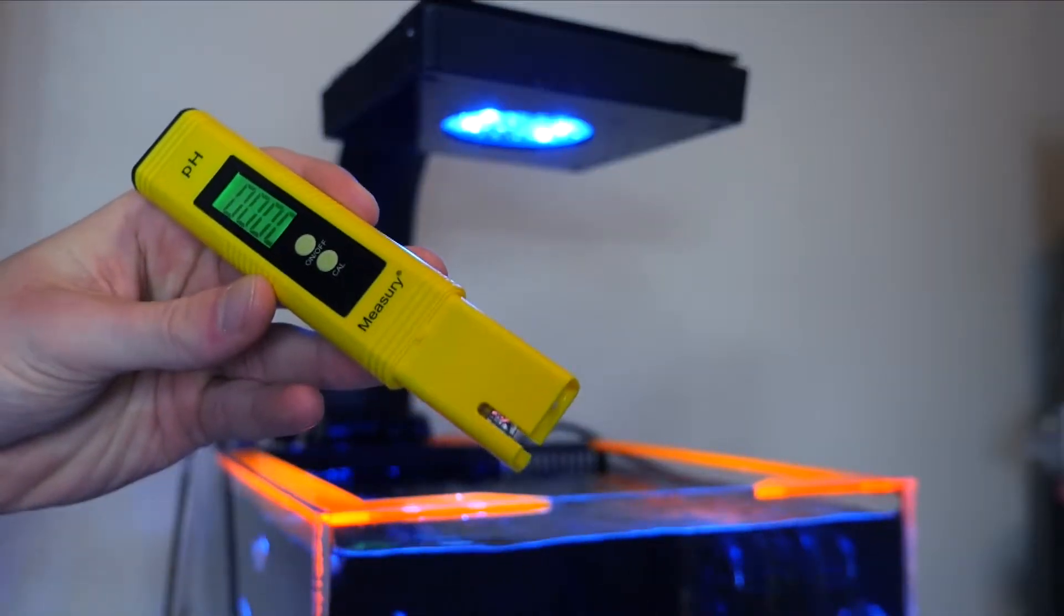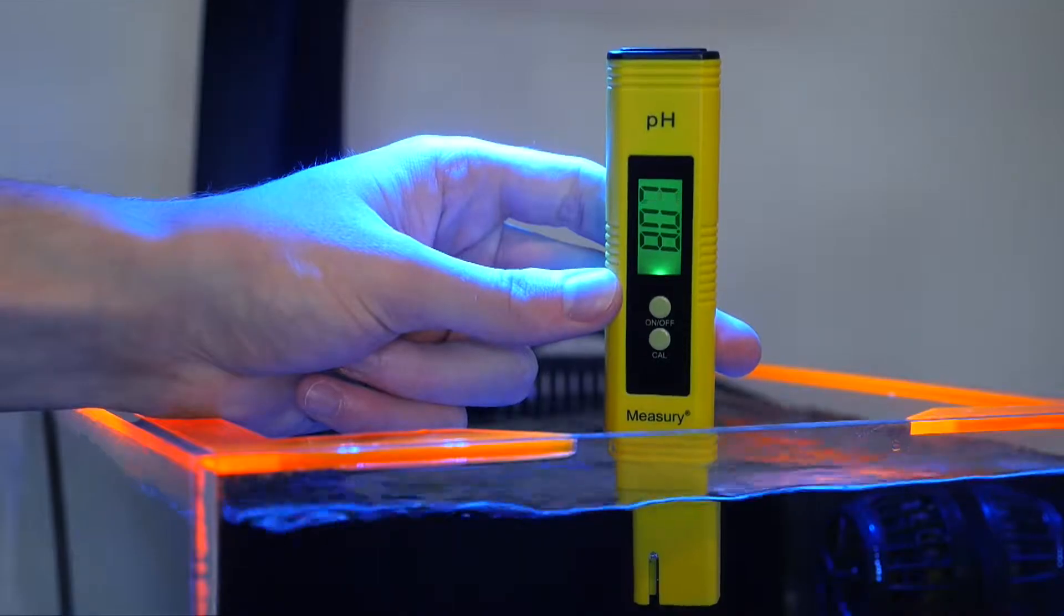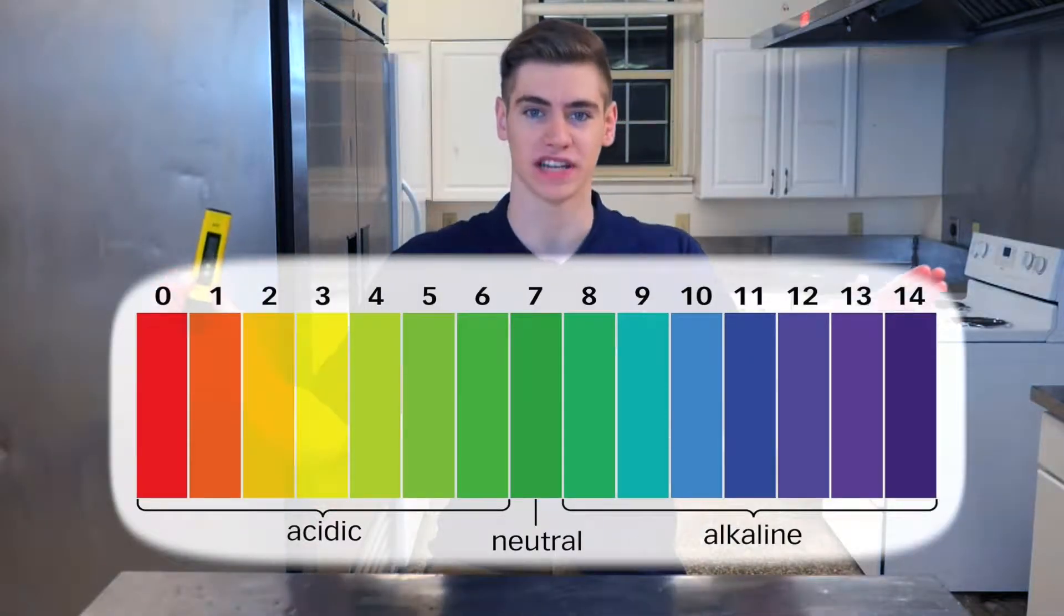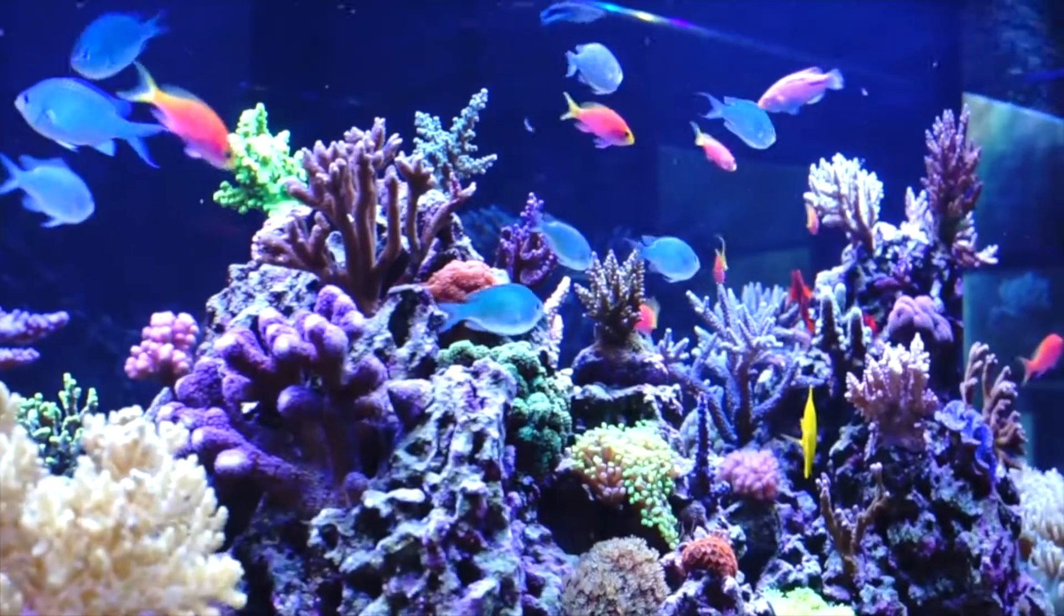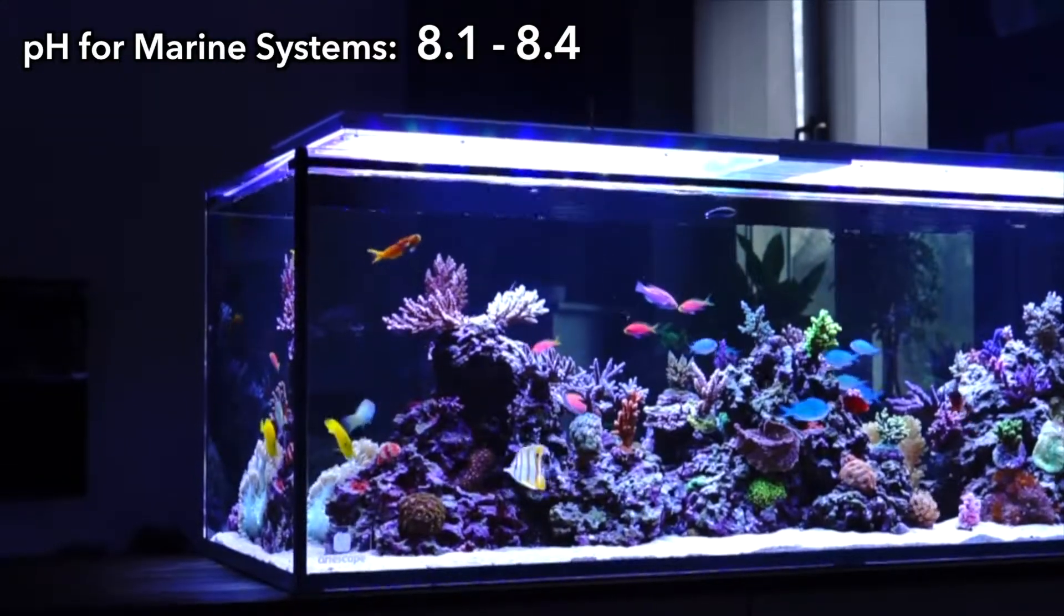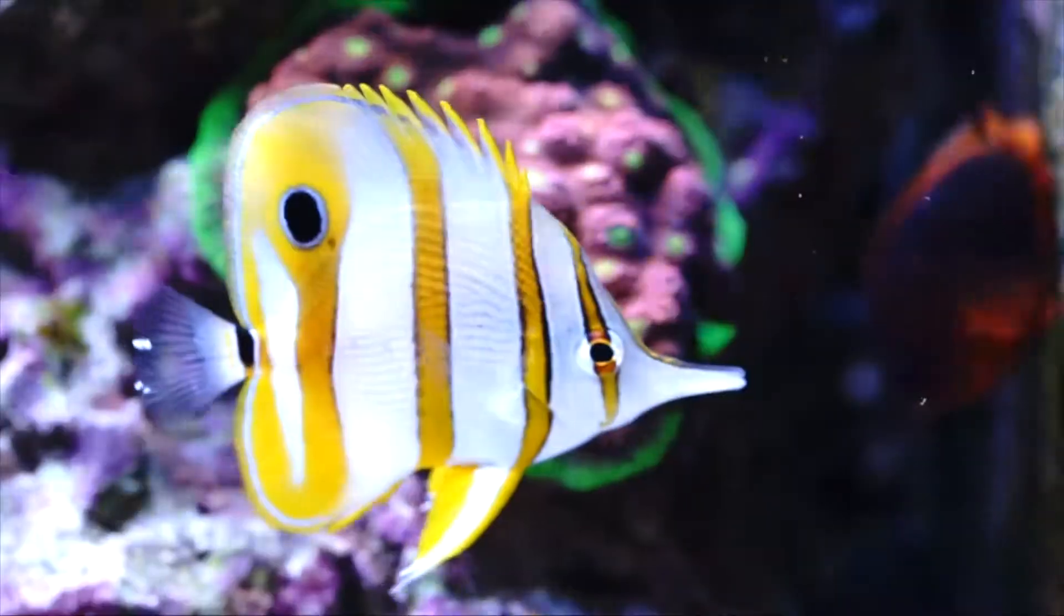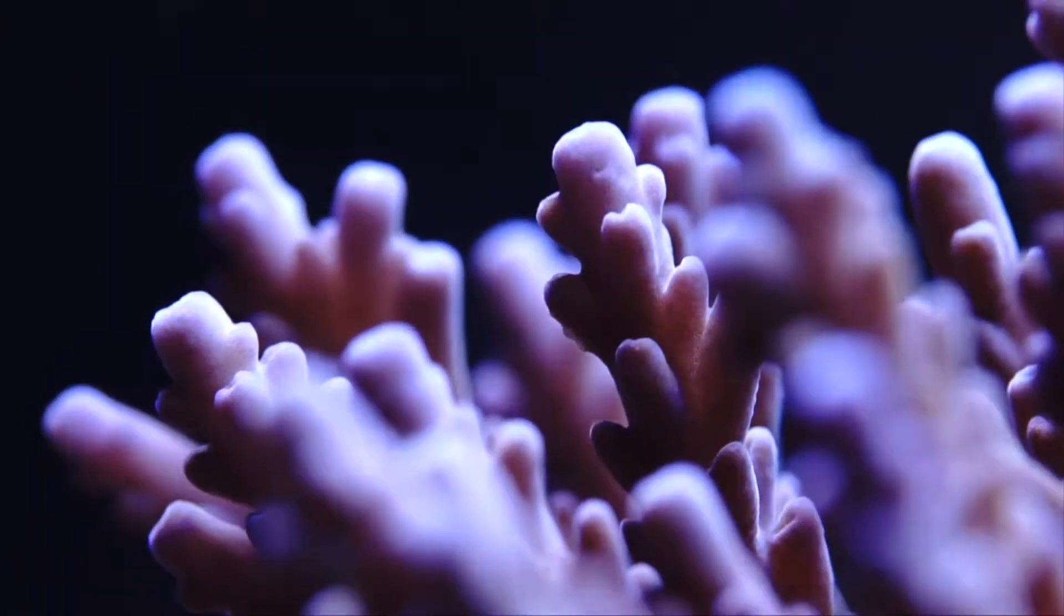The MeasureE pH Meter provides instant measurements at the touch of a button, and they're displayed electronically on an illuminated screen. The meter is capable of displaying the entire pH scale from 0 to 14 with an accuracy of two decimal places. Testing for and maintaining the correct reading of 8.1 to 8.4 for marine systems helps fish resist illness and also keeps coral from calcifying at an accelerated speed.